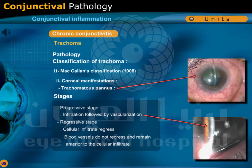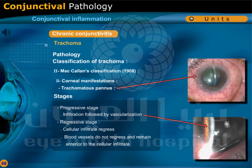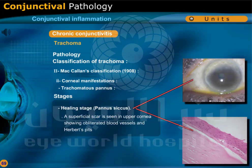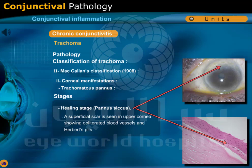Stages of trachomatous pannus: progressive stage — infiltration followed by vascularization; regressive stage — cellular infiltrate regresses but blood vessels do not regress and remain anterior to the cellular infiltrate. Stage 1 (T1) incipient trachoma: immature follicles in the palpebral conjunctiva and fornix, more than 1 mm, flat with the conjunctival surface, not expressible, and surrounded by dilated capillaries.